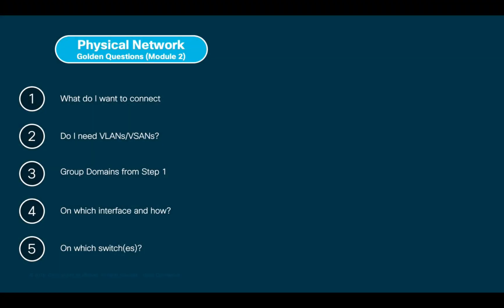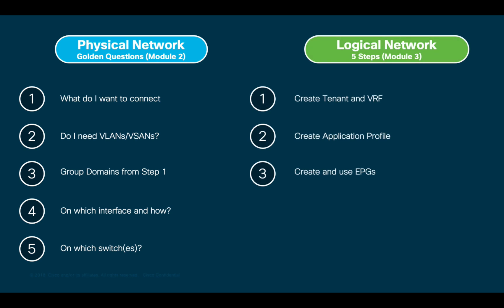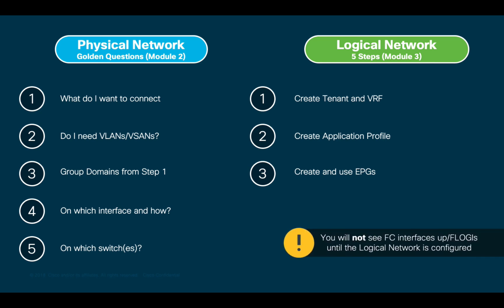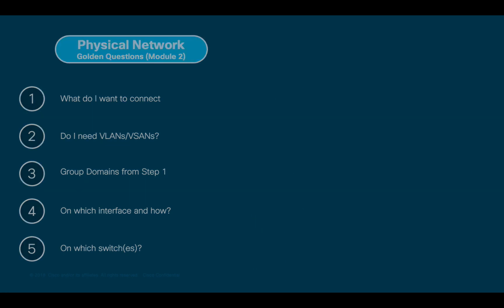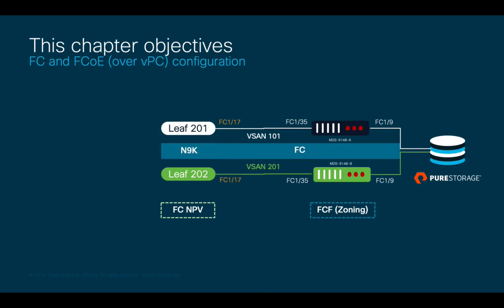To perform the physical network configuration, we will follow the same golden questions we have learned throughout this module, and then in Module 3 we will continue this configuration through the logical network. It is important to mention that you will not see NPV Floggies on ACI, nor Fiber Channel interfaces come up, until you finalize the logical network configuration.